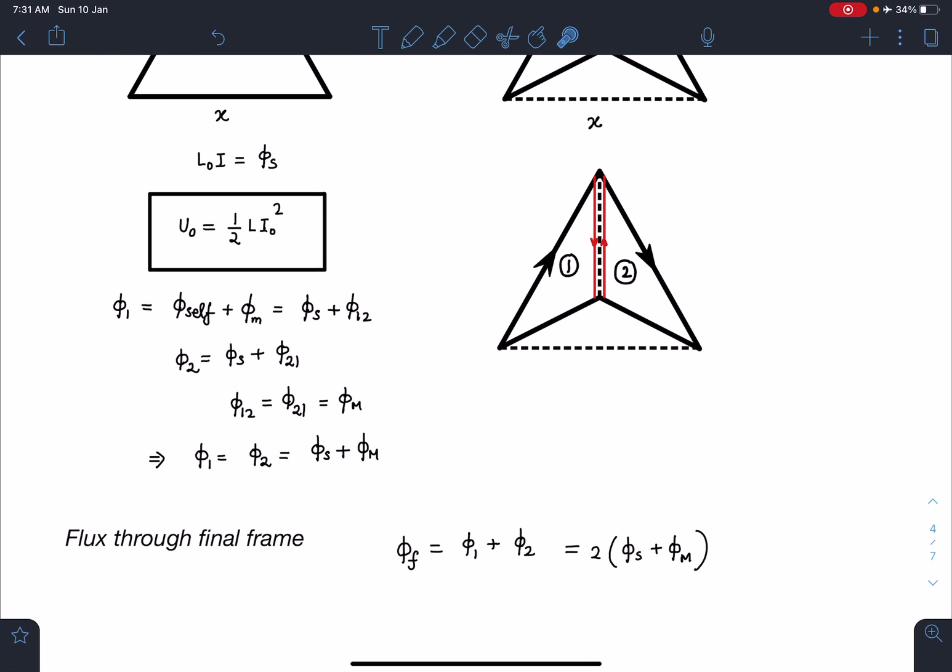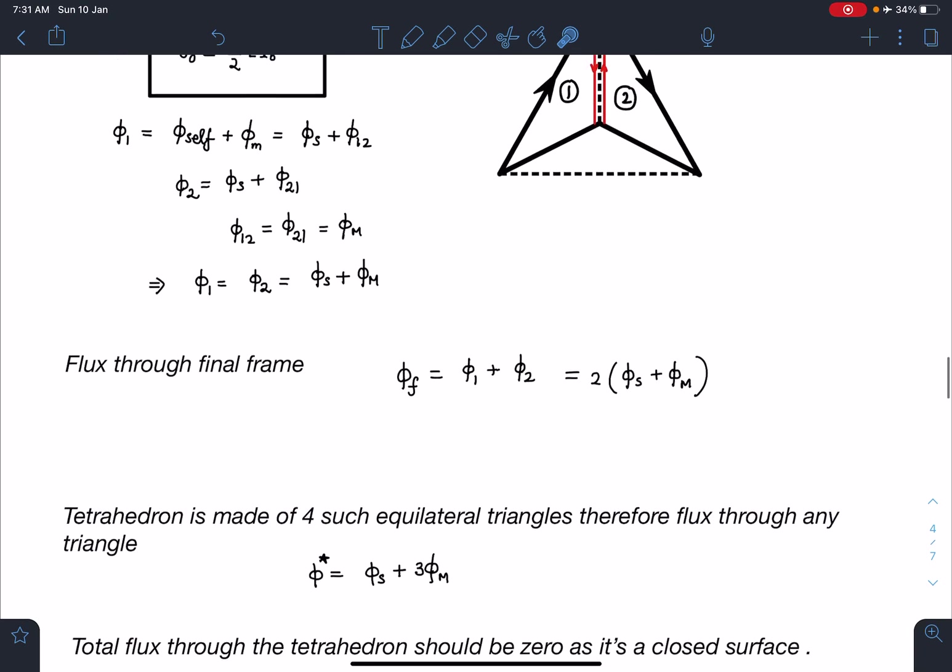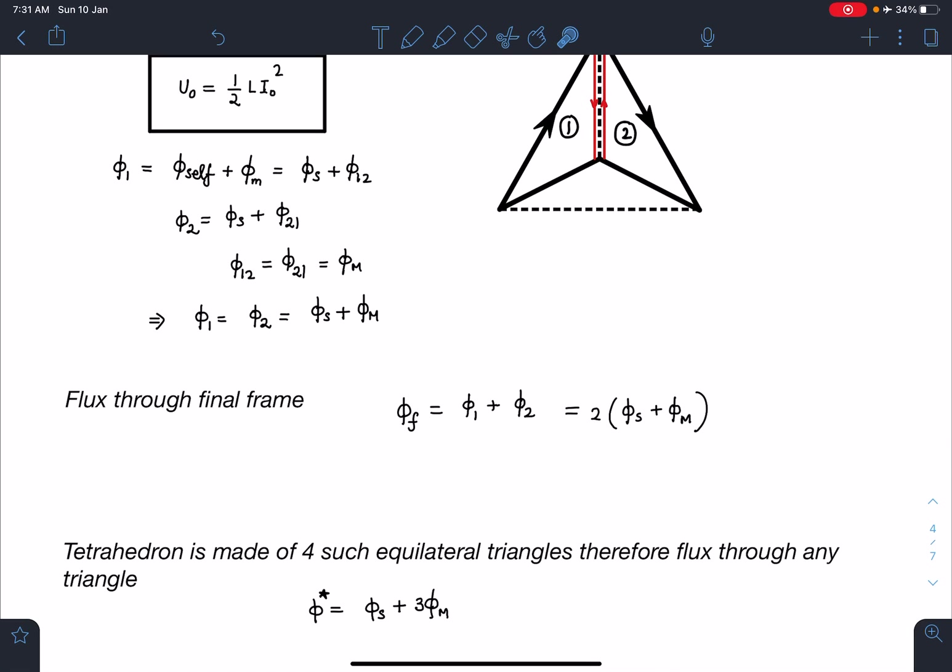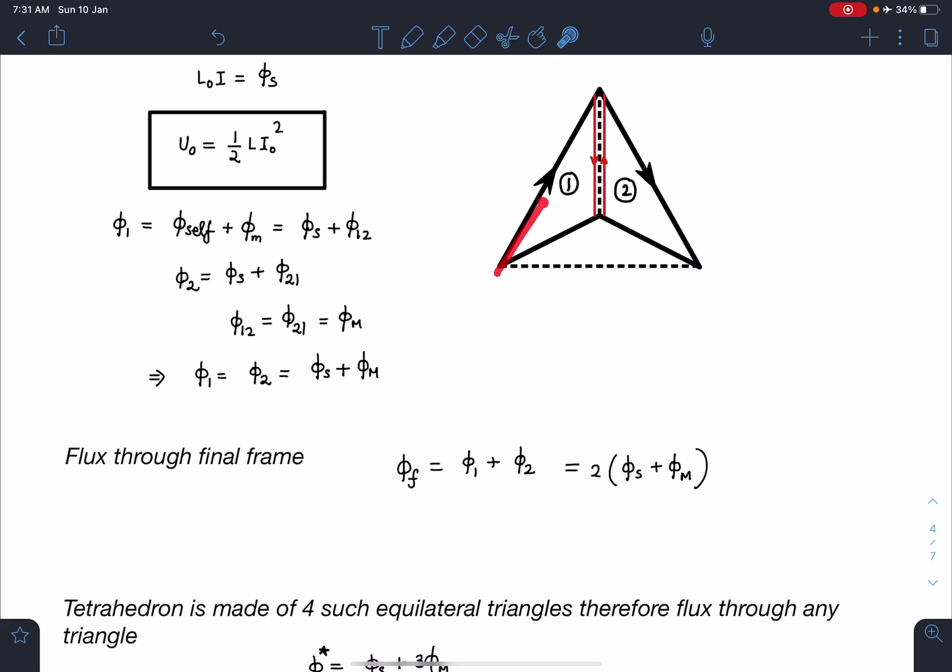Now, there is the most crucial step of this problem. I can say here tetrahedron is made of four such equilateral triangles, you can see here that is made of four. One, two, this is three and this one is fourth one. You can apply superposition principle here like we do for current carrying dipoles.